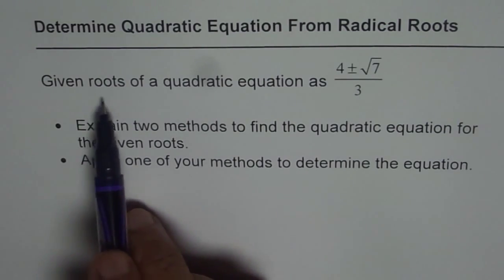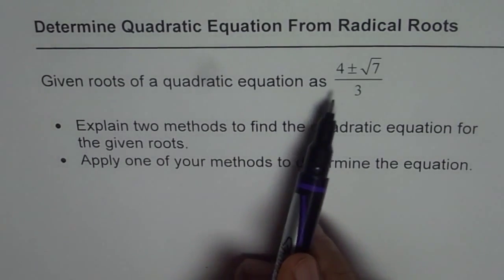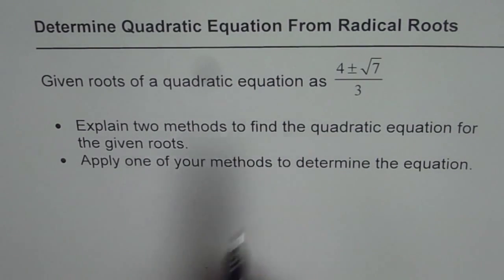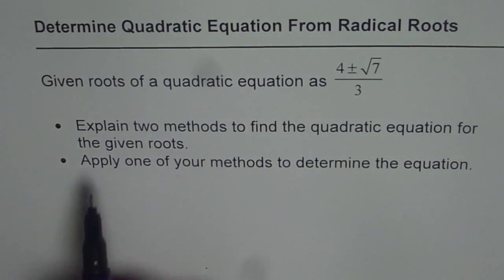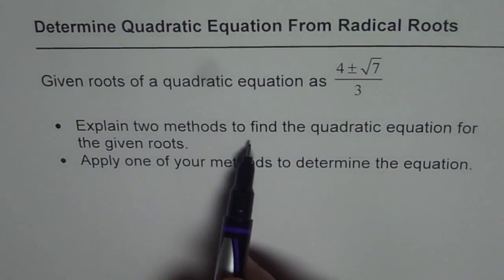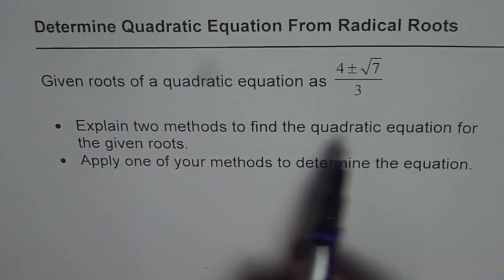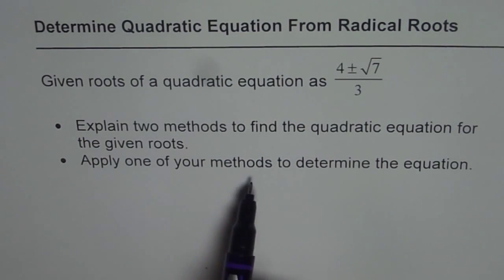In this question we are given roots of a quadratic equation as 4 plus minus square root of 7 divided by 3. Explain two methods to find the quadratic equation for the given roots. Apply one of your methods to determine the equation.